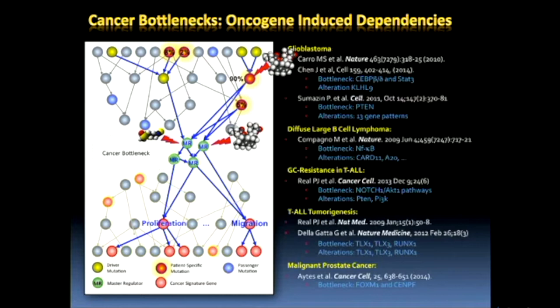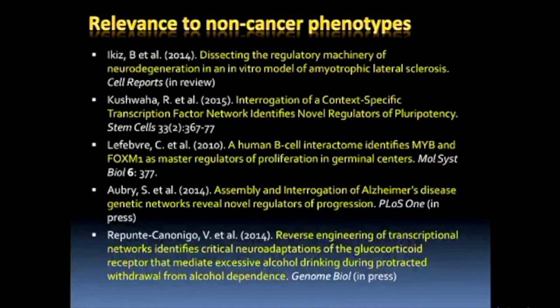This is important for a couple of reasons. First, you're now capturing all the mutations that may lead to that tumor in one particular patient. Even more importantly, you no longer have to develop one drug for one mutation — you can now capture a large number of patients with the same type of drugs. We have applied this paradigm not just to cancer but to many other non-cancer diseases — from alcohol addiction, to stem cell pluripotency control, to ALS, and to Alzheimer's.